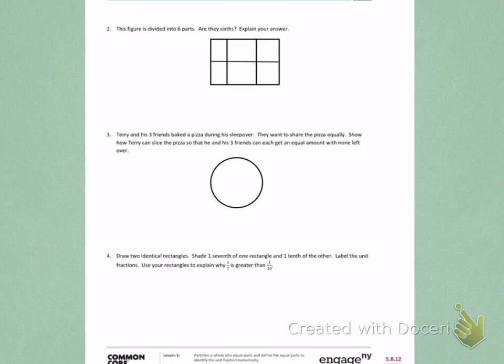As we learned about in class, fractions need to be divided into equal parts. When I look at the picture on number 2, I can see that these 2 parts are bigger than these parts on the side, and they're also bigger than these parts. So these are not equal parts.